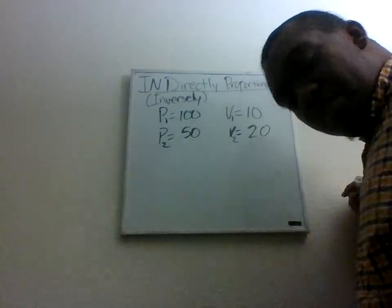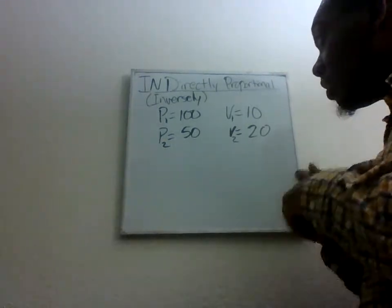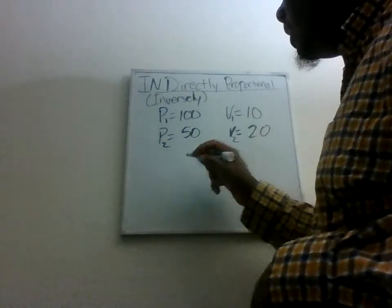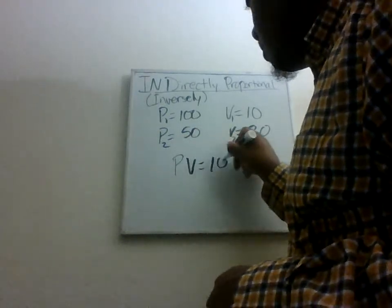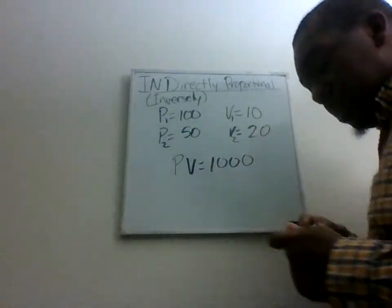So let's see what happens when we do this, shall we? So we know that our constant is 1,000. That means that whenever you take the pressure and you multiply times the volume, you automatically will get 1,000.